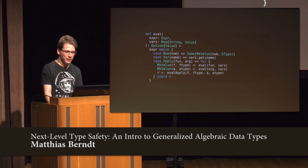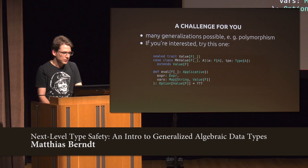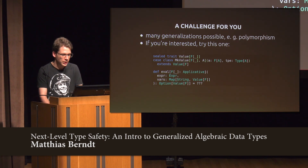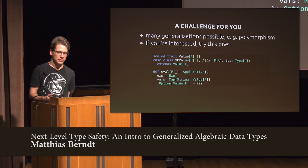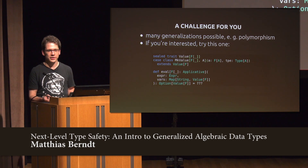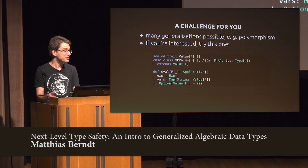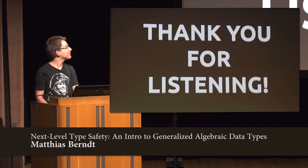There are of course many generalizations you can apply to this — you can extend it with all sorts of other types. One interesting one adds a higher-kinded type parameter to the value constructor, which lets you have effects in your expression language: functions that fail with an error, side effects, a reader monad. These are all very useful when working with expression languages. That is what I've got — thank you very much for listening.